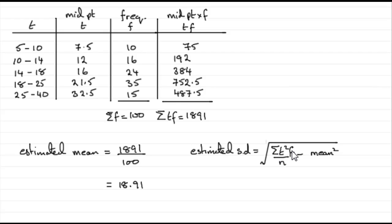So we need to make up a column for that. So if we start then by just drawing a column in here, something like this, then this column would be t squared f, and we'll just extend that across there.